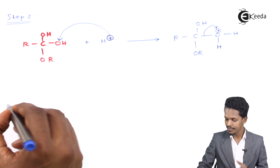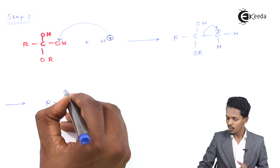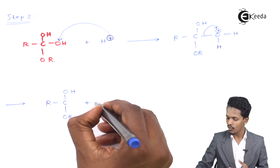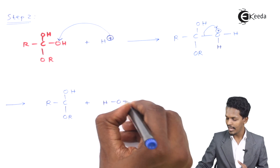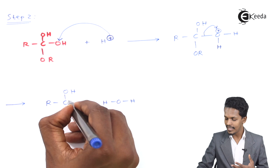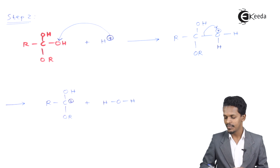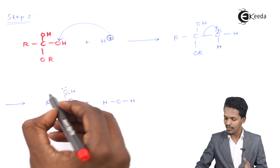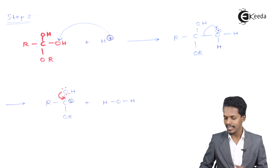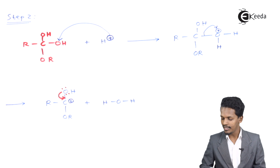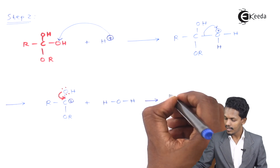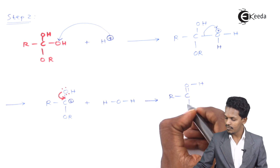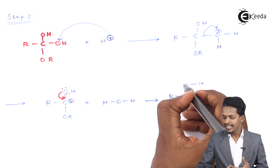As the electrons shift, the water molecule H₂O is released, and a positive charge appears on the carbon. The lone pair of electrons on the adjacent oxygen atom then shifts onto the carbon, forming a C=O double bond.